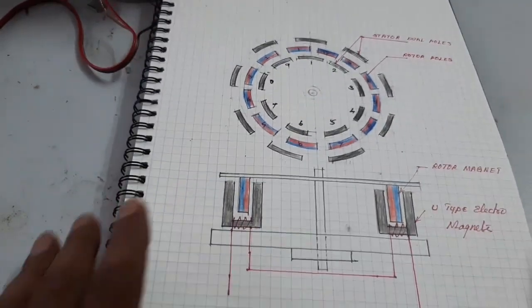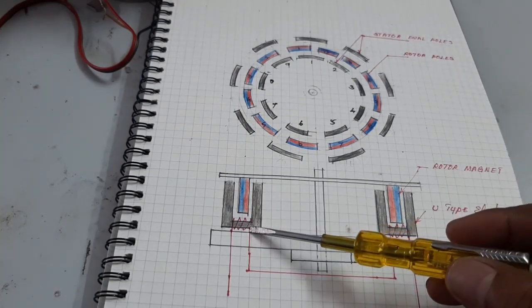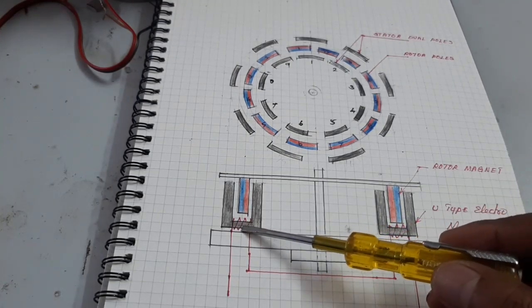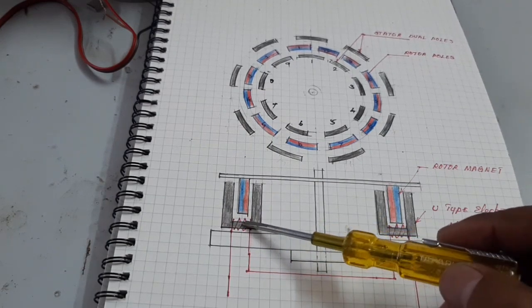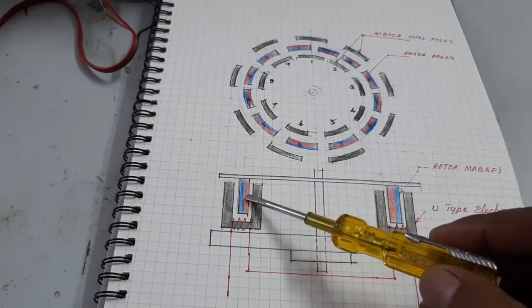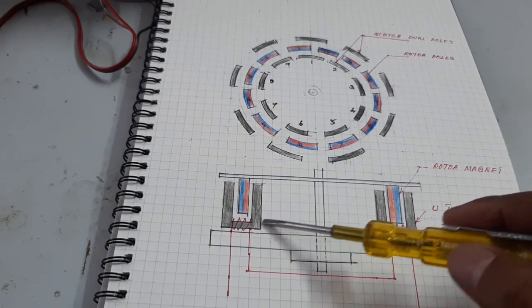A U-type electromagnet is used for the stator because both stator poles, dual poles, interact with the rotor poles. That is why it is a very efficient BLDC motor.